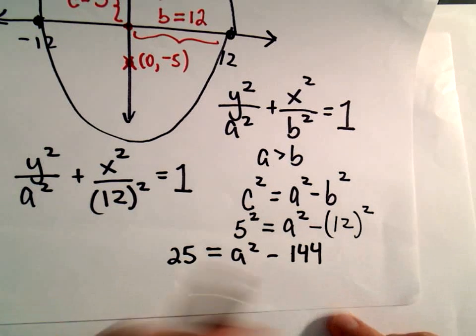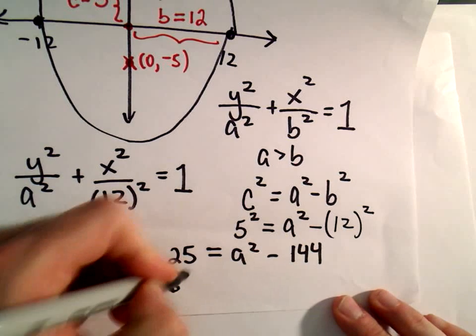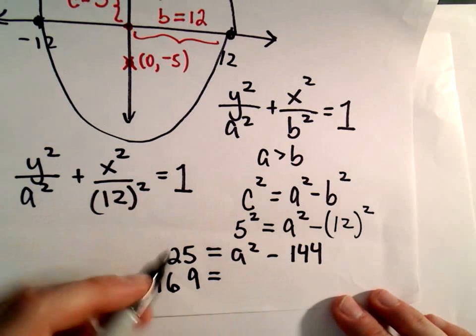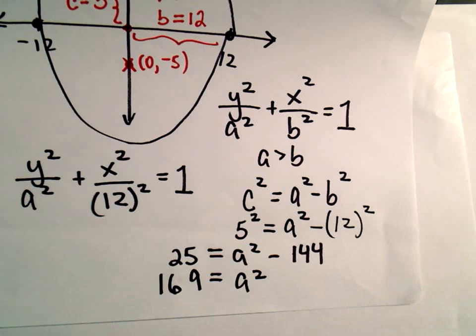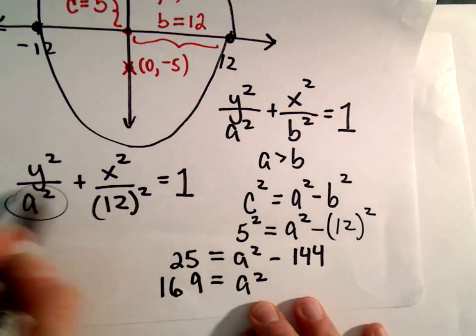We can add 144 to both sides, that'll give us 169 = a². And I'm not even going to bother to solve for a because I'm just going to replace our a² with 169.